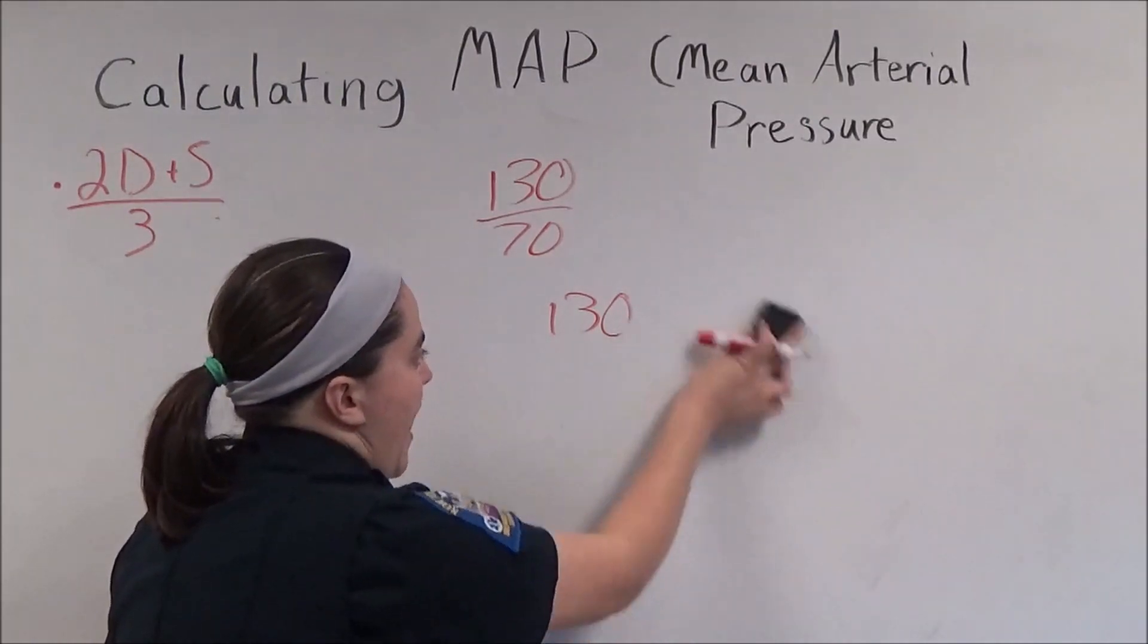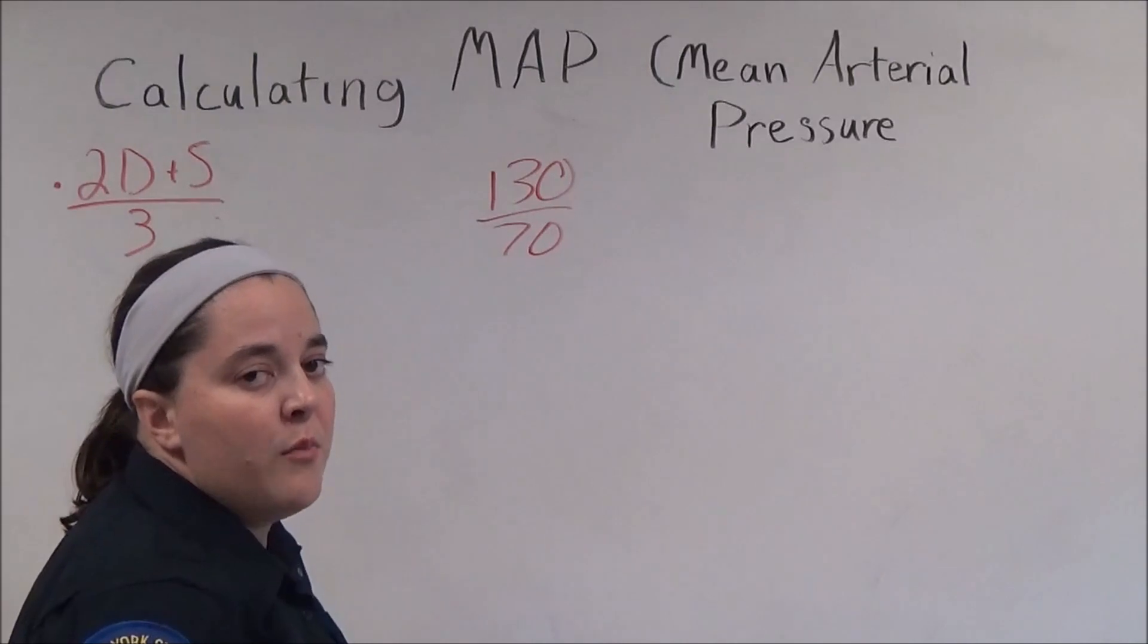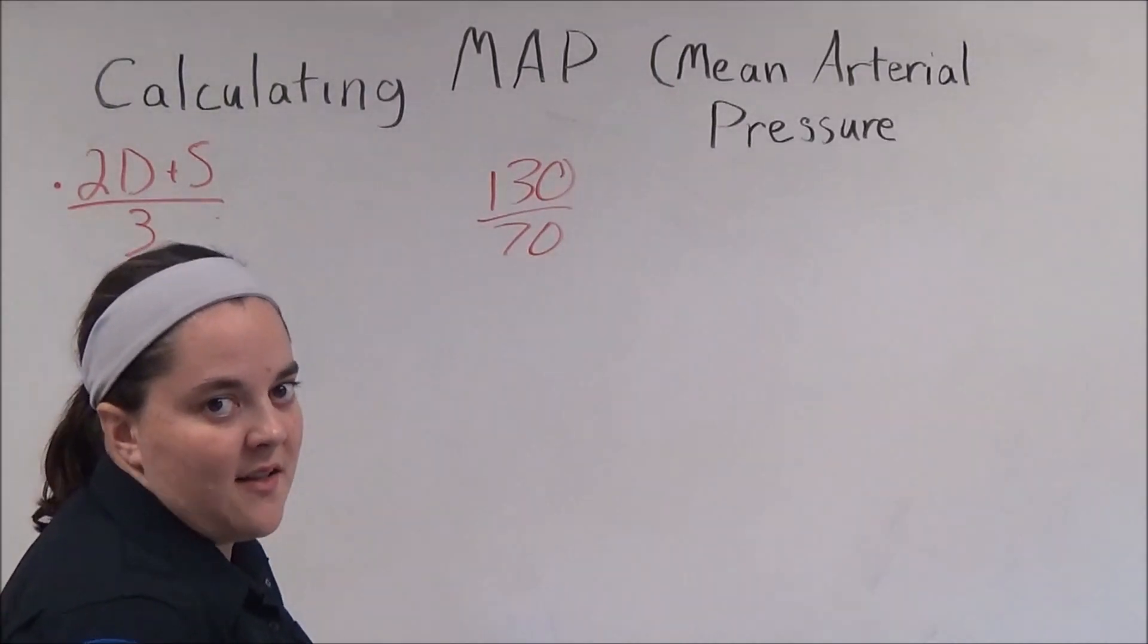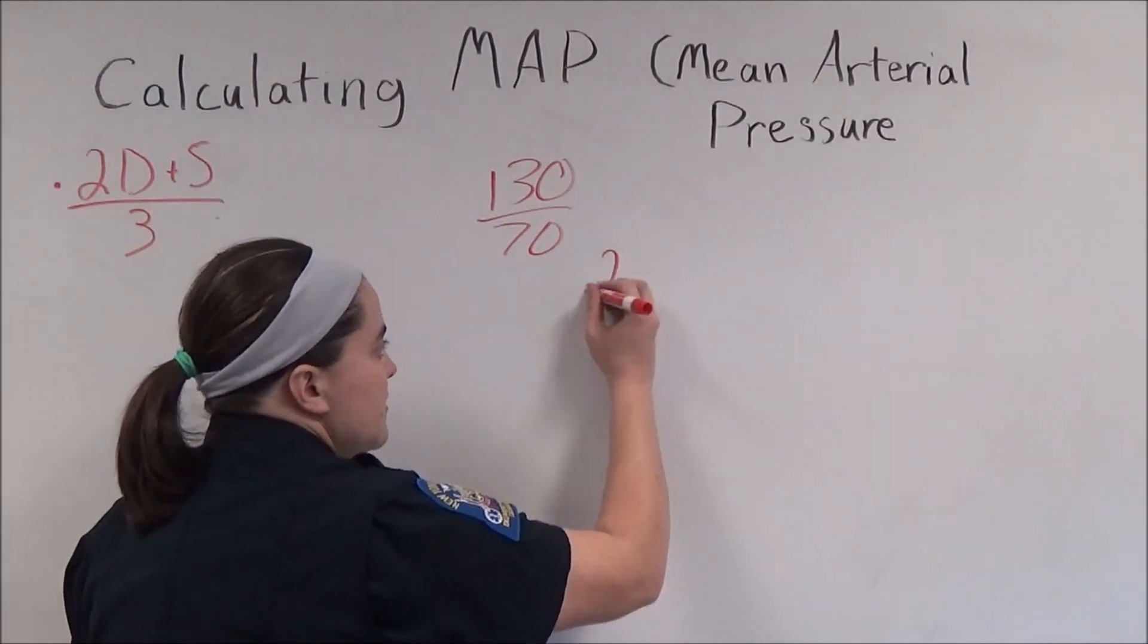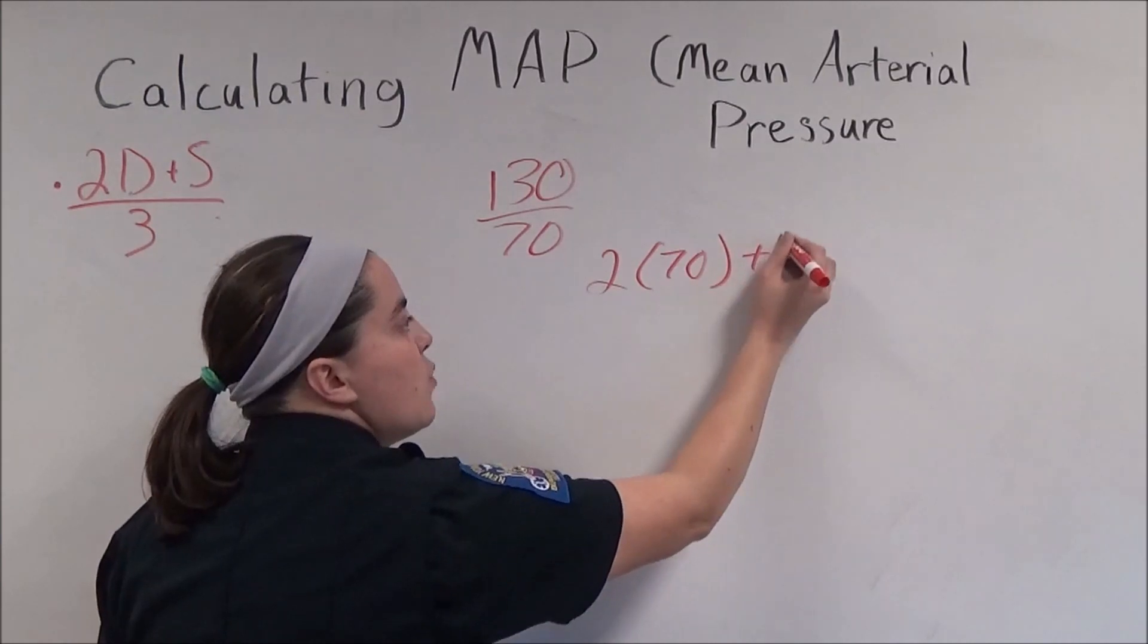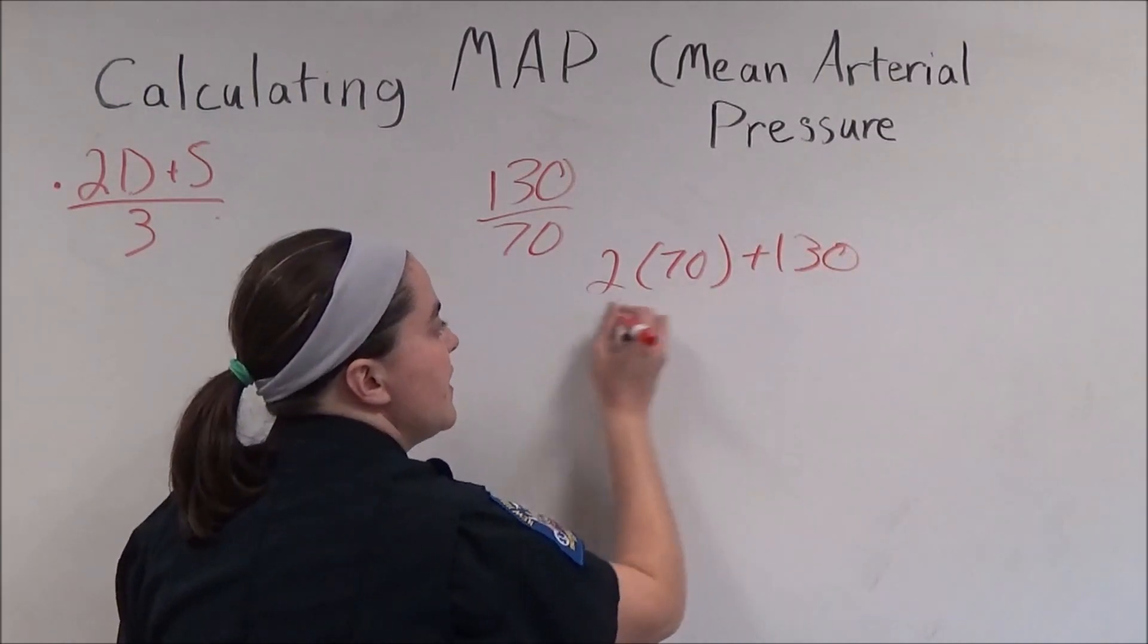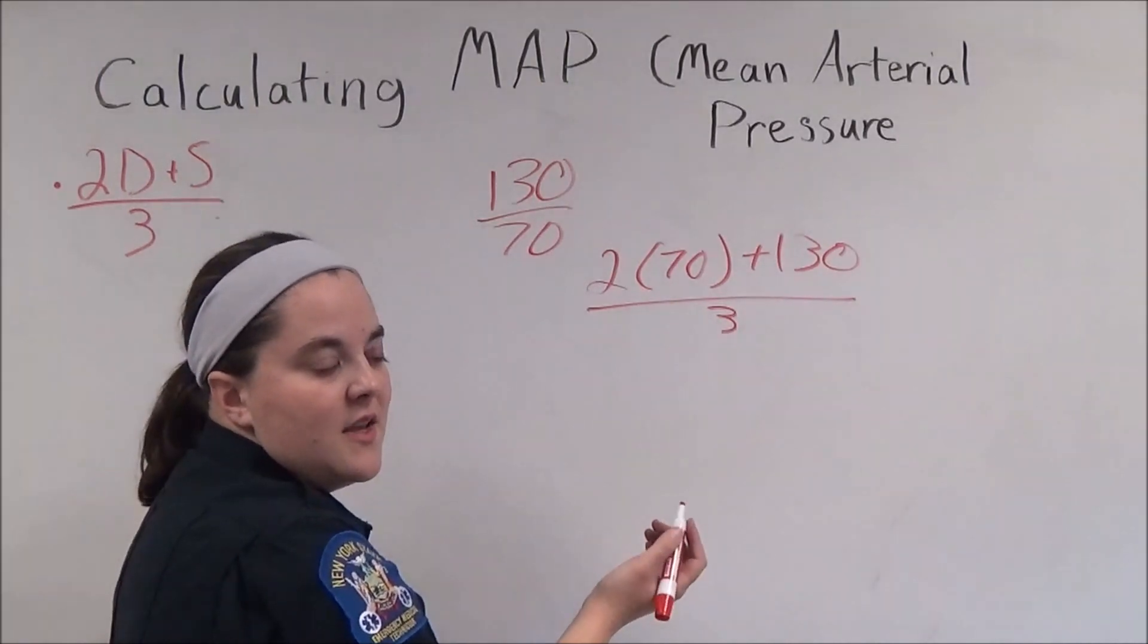So now let's calculate the MAP of 130 over 70. As a reminder, the formula for this is 2 times the diastolic plus the systolic divided by 3. So 2 times 70 plus 130 divided by 3. 2 times 70 is 140.